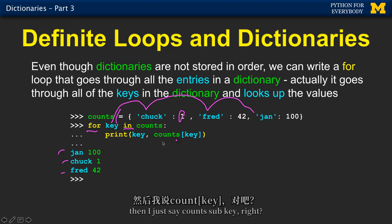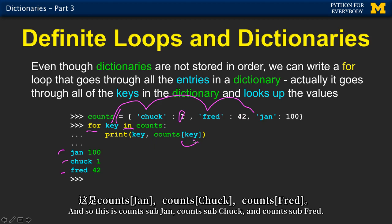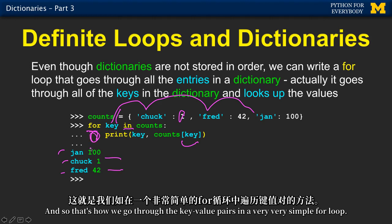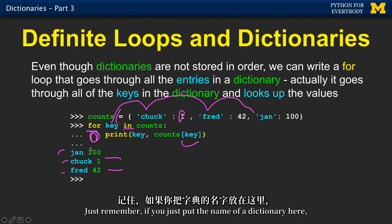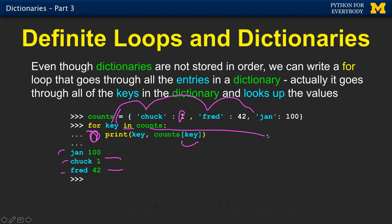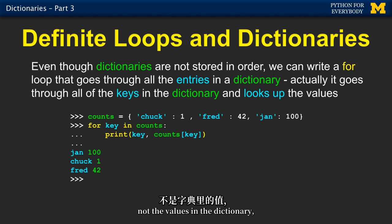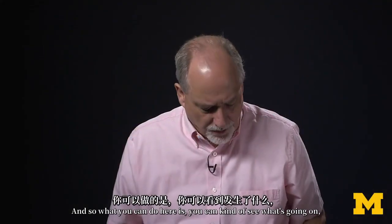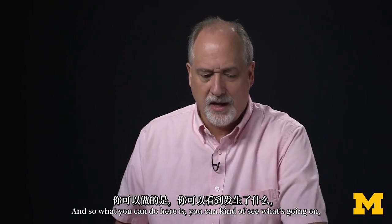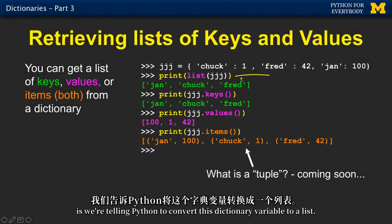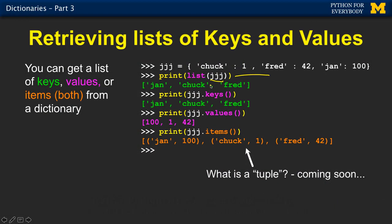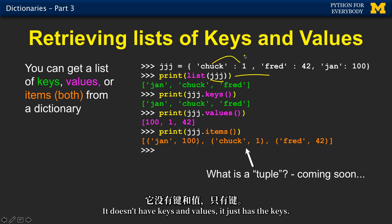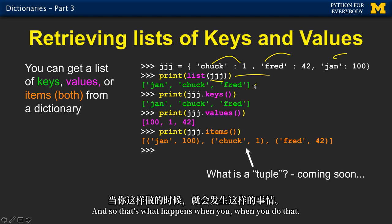Now if I actually want to get the values, I just say count sub key. So key is whatever — Jan, Chuck, and Fred — and so this is count sub Jan, count sub Chuck, and count sub Fred. That's how we go through the key-value pairs in a very simple for loop. Just remember: if you put the name of a dictionary in a for loop, the loop is going to go through the keys, not the values. But you can get every value by saying count sub key. You can also convert the dictionary variable to a list, which gives you the keys, since lists have less information.